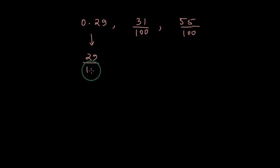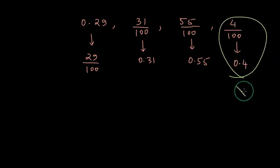So 0.29 becomes 29 divided by 100, 31 by 100 becomes 0.31, 55 by 100 becomes 0.55. I had written 4 by 100 and she said it's 0.4 and this was not correct. 4 parts out of 100 is not 0.4 but rather it is 0.04.